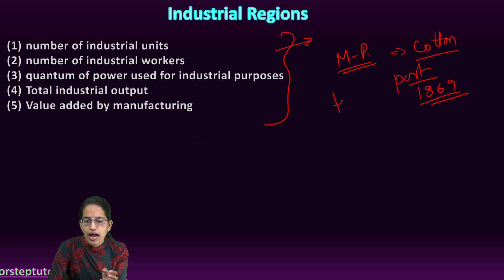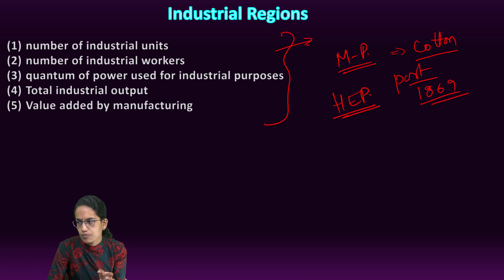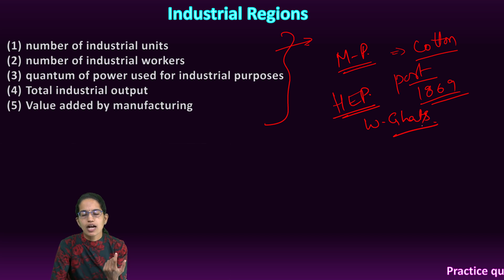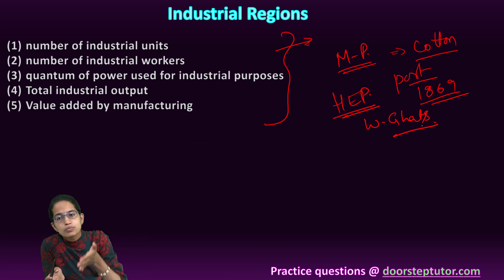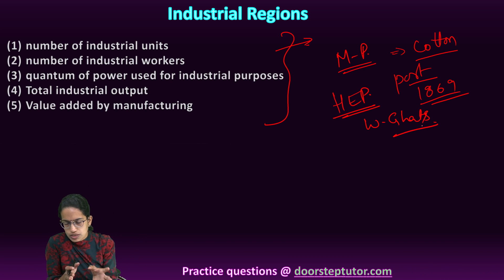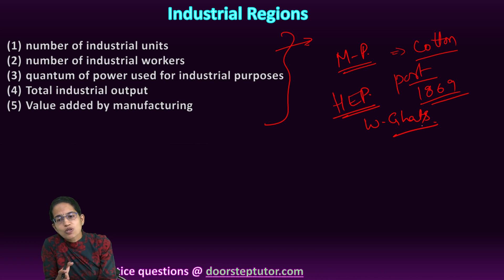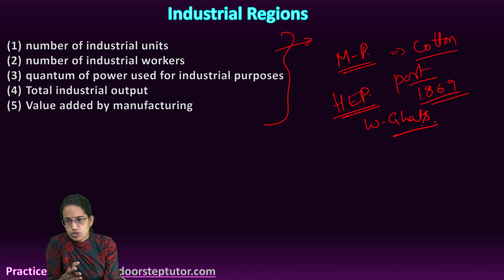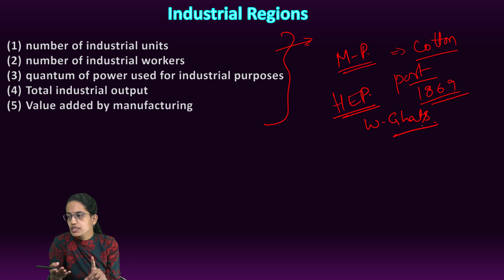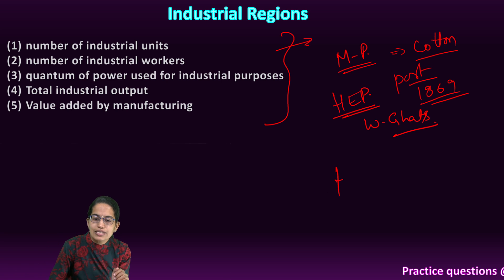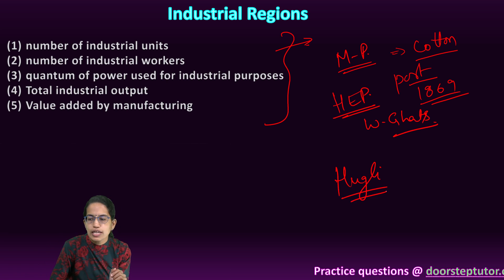This region had a significant amount of hydroelectric power projects, which were the result of the Western Ghats. With numerous rivers and tributaries draining from the Western Ghats, there were numerous hydroelectric power projects. Besides cotton textile, this region is also known for chemical industries, petrochemical industries, leather industries, synthetic industries, plastic goods industries, electrical, and shipbuilding as some of the major industries.